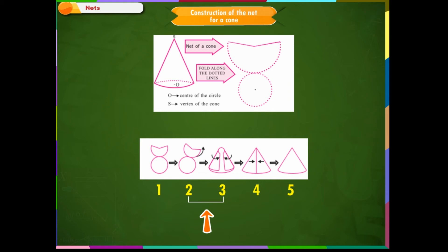Step 3: Fold the major sector in this way to get a shape of a cone and join the ends. Step 4: Fold the cone so formed over the first circle and thus you get a three-dimensional cone.